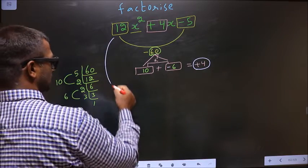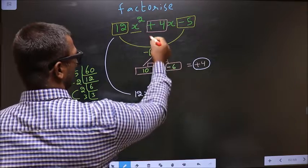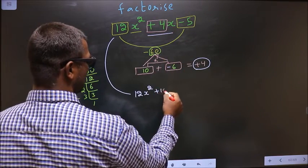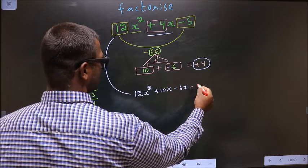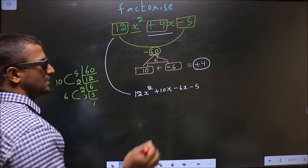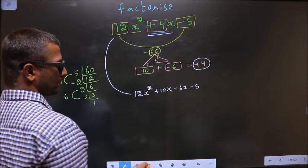Now you change this. So 12x² - in place of 4x now you write this plus 10x minus 6x minus 5. Did you understand? In place of +4x I have written this. Next.